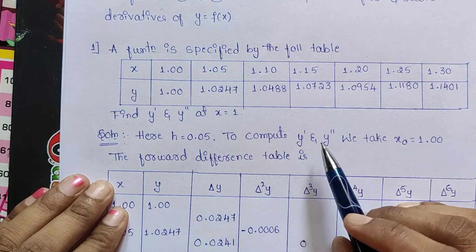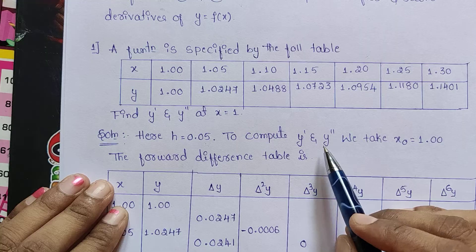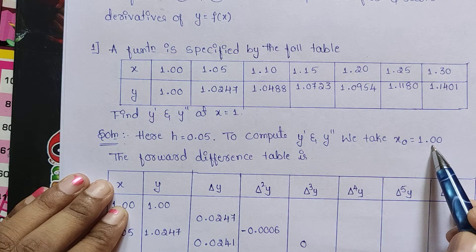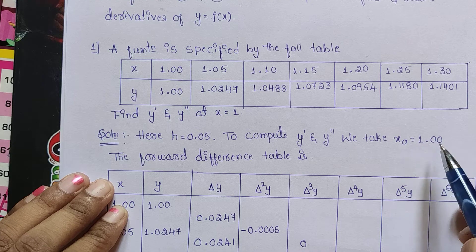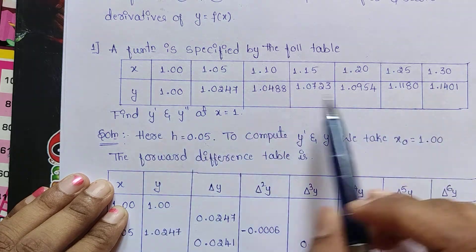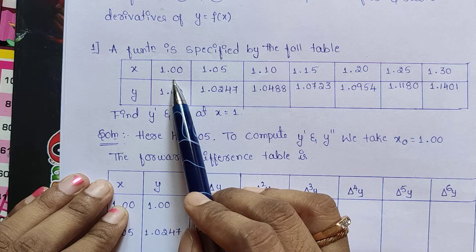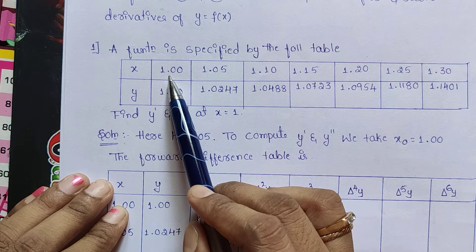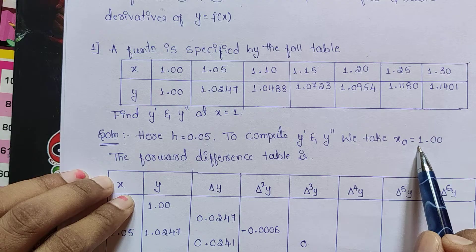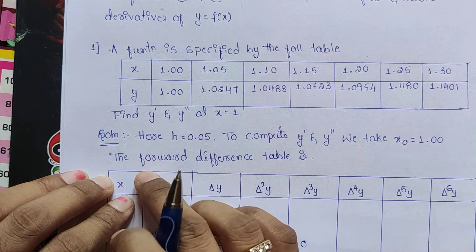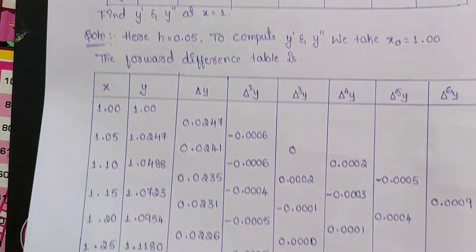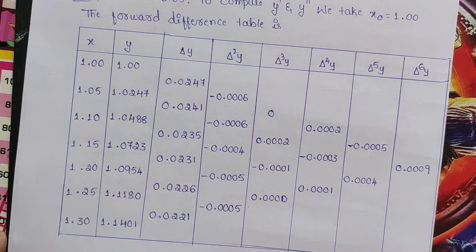To compute y′ and y″, that is the first derivative and second derivative, we take x₀ = 1.00, because the initial value in the x column is 1.00 and this is considered as x₀. So x₀ = 1.00. Now let us draw the forward difference table.